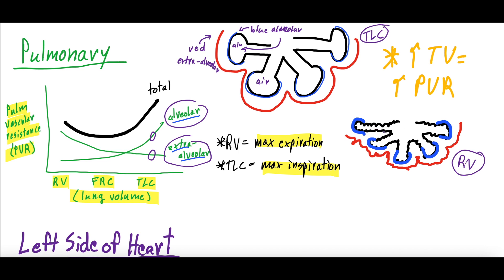The opposite happens at max expiration. The alveoli are collapsed and shriveled, so the alveolar blood vessels are no longer stretched — they're plump and bulky, giving them decreased PVR at max expiration. But when all the tissue collapses, the extra-alveolar blood vessels become tortuous and kinked, giving them increased PVR at max expiration. This is something you kind of have to revisit a few times before it sticks, so let us know in the comments if you have questions.